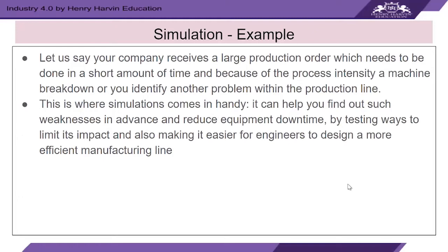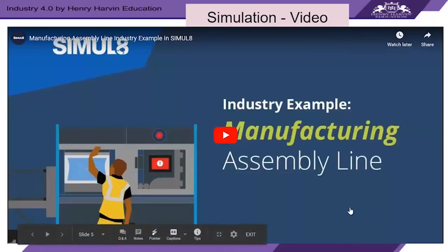As an example of simulation: let's say your company receives a large production order which needs to be done in a short amount of time, and because of the process intensity, a machine breaks down or you identify another problem within the production line. This is where simulations come in handy. It can help you find out such weaknesses in advance and reduce equipment downtime by testing ways to limit the impact, and also making it easier for engineers to design a more efficient manufacturing line.